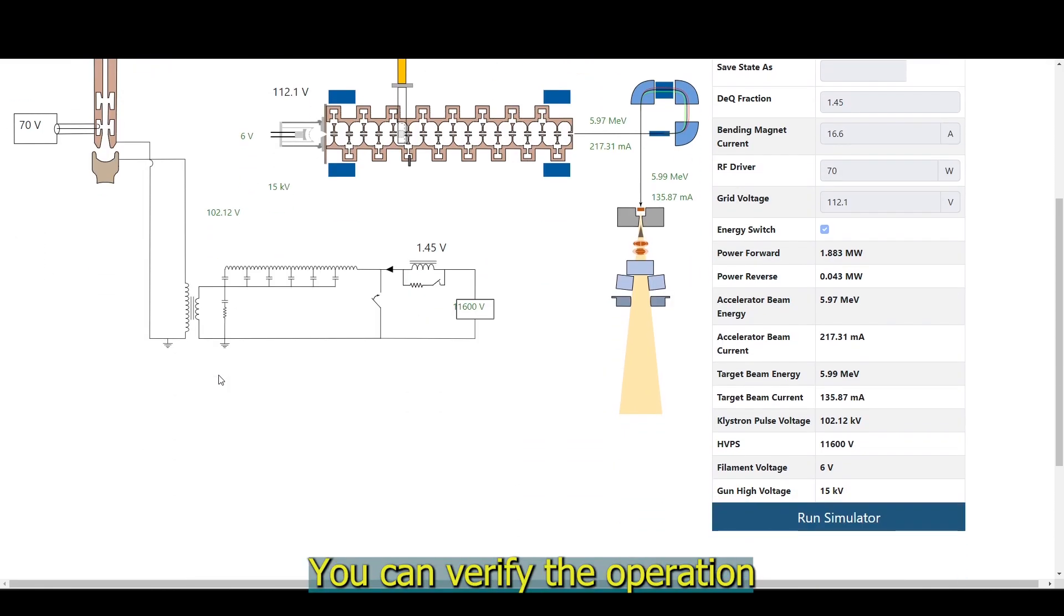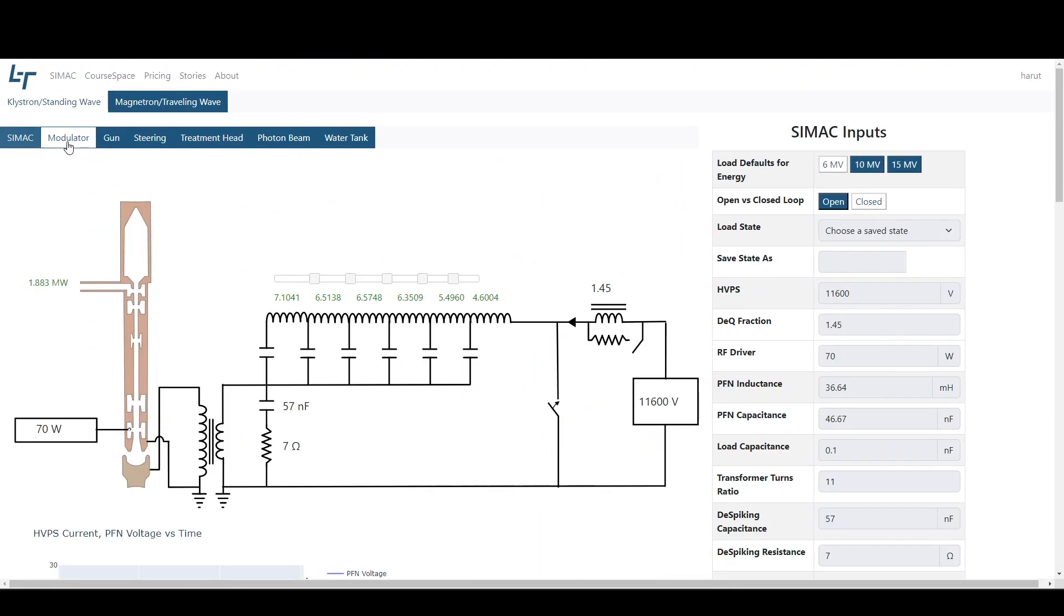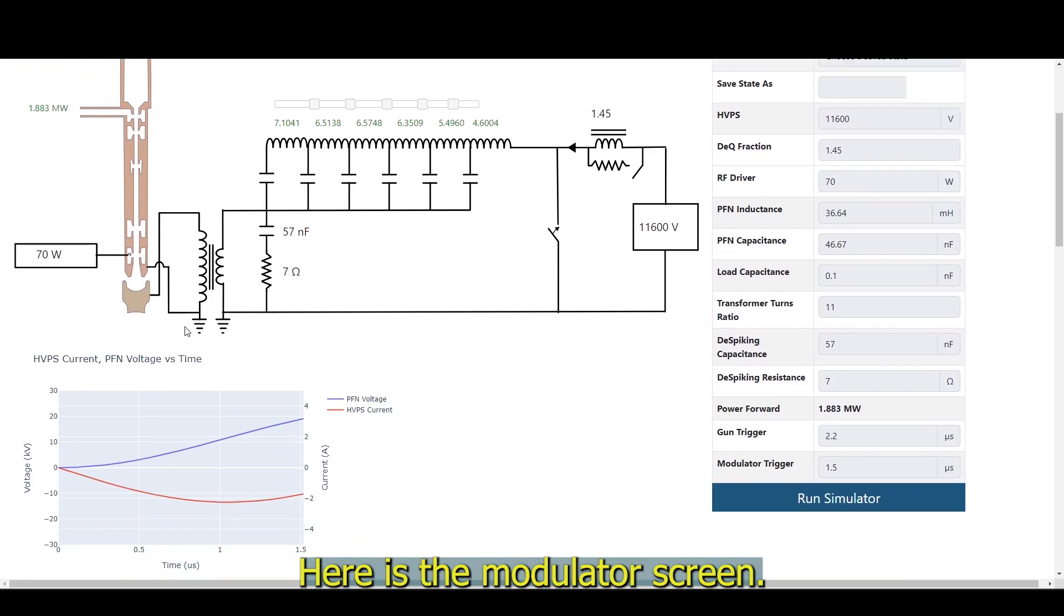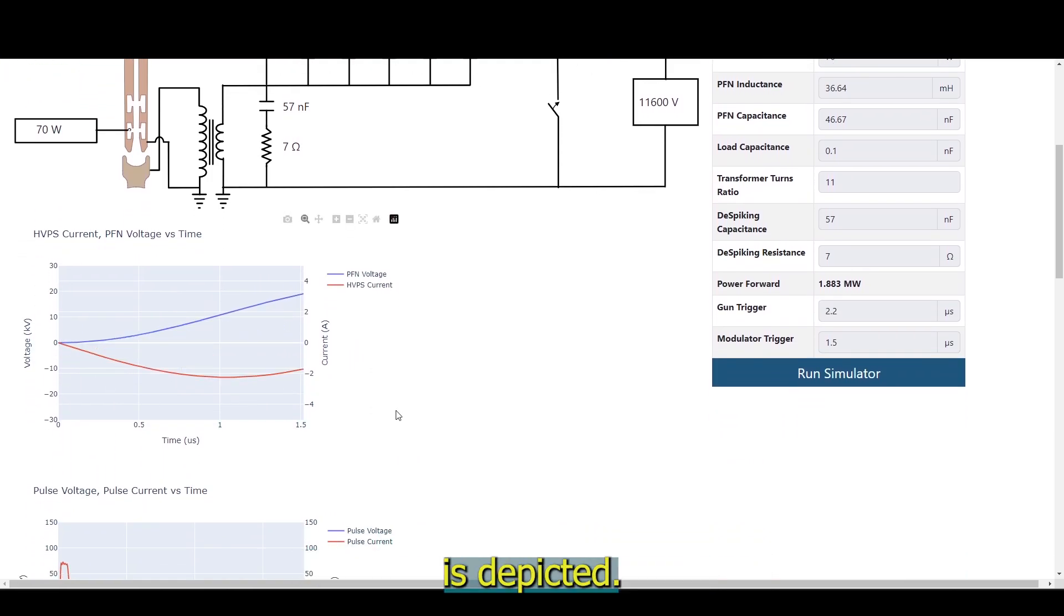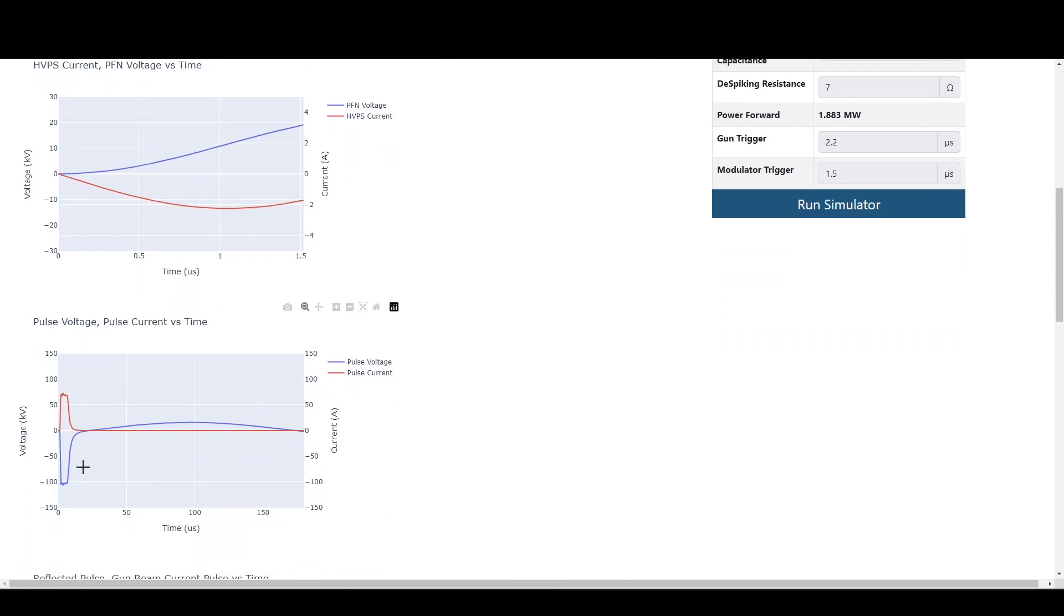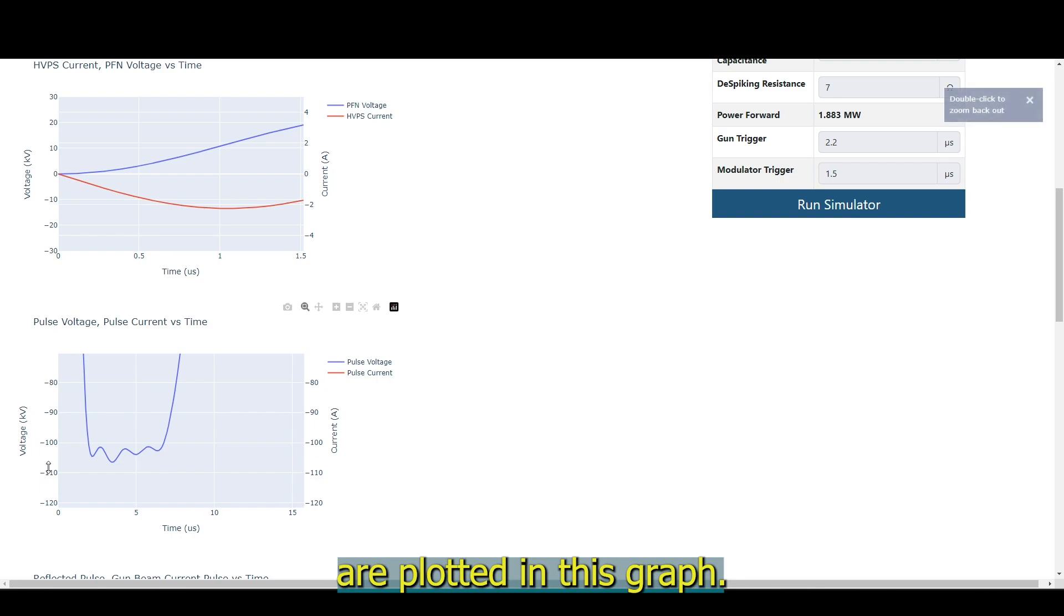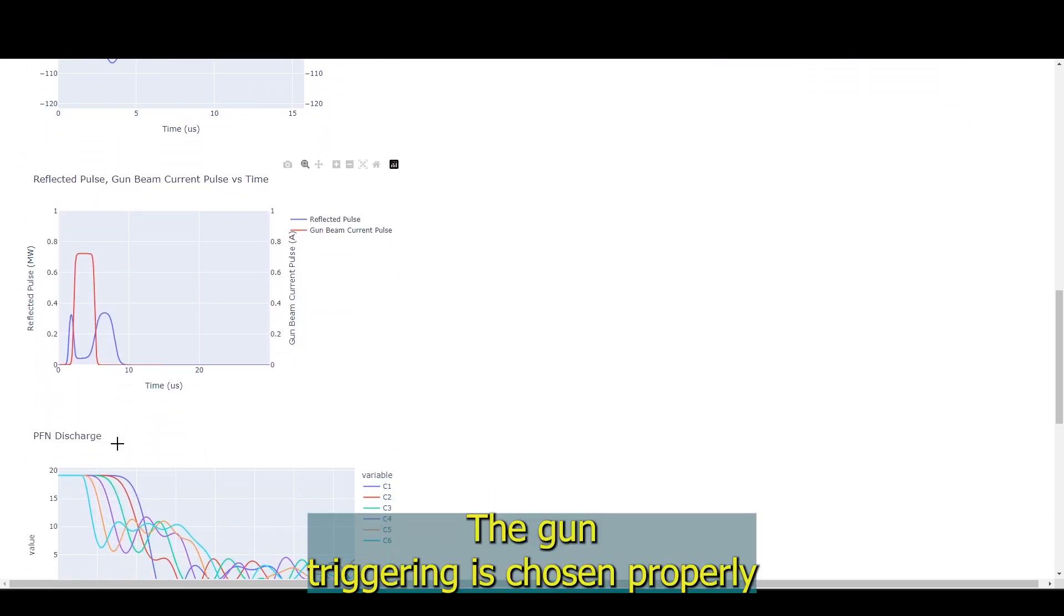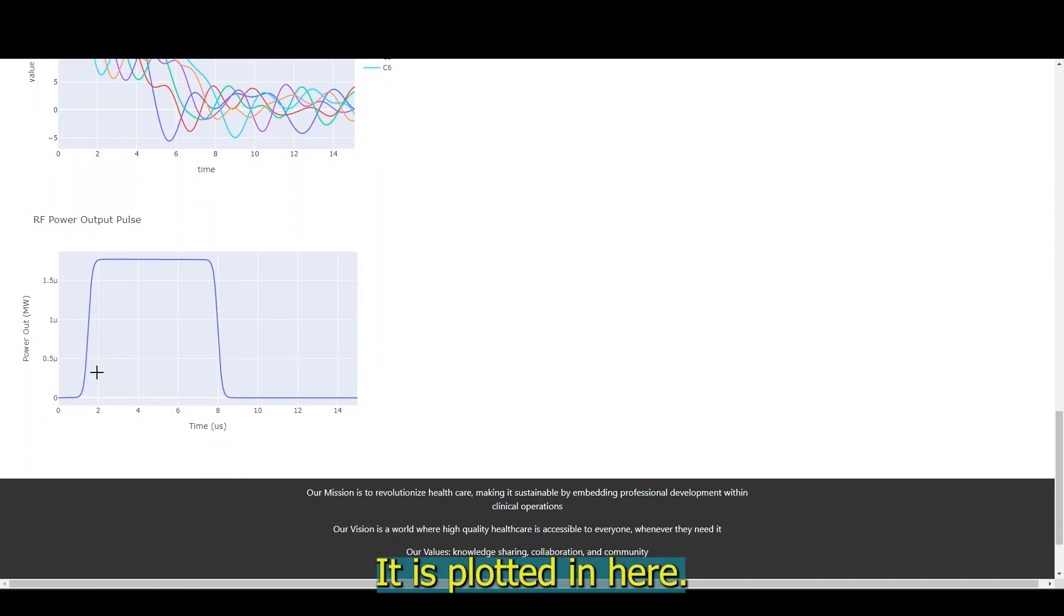You can verify the operation by looking at the graphs that are generated. Here is the modulator screen. The PRF charging cycle is depicted. The generated voltage pulses are plotted in this graph. The gun triggering is chosen properly and the output power looks okay. It is plotted in here.